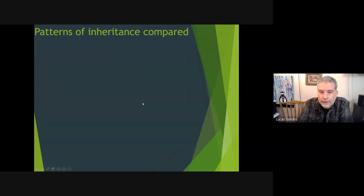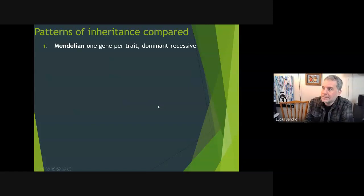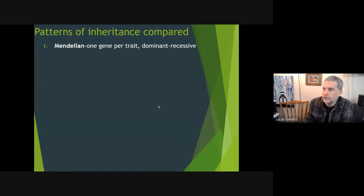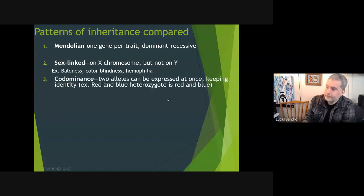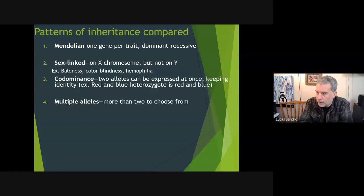Let's compare our patterns of inheritance - sort of a roundup of all the ones we've done. We have Mendelian: one gene per trait, dominant-recessive. Then we had sex-linked, which we used for baldness, colorblindness, and hemophilia - that's the one where you have to write the X and the Y with the superscript alleles. Did a whole pedigree on that. Codominance and multiple alleles went together - our example for that was blood type.